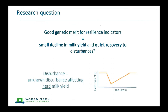The question I want to answer in this presentation is: do animals with good genetic merit for the resilience indicators really have a smaller decline in milk yield and a quicker recovery after a disturbance, compared to cows with bad genetic merit for the resilience indicators?